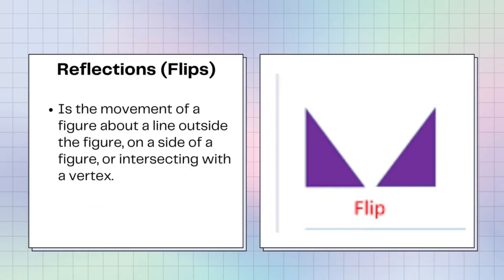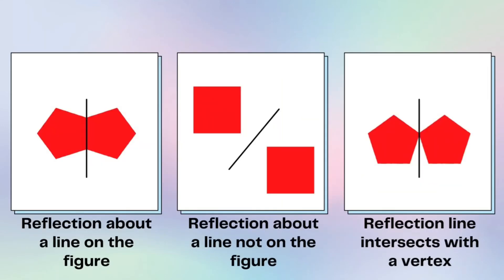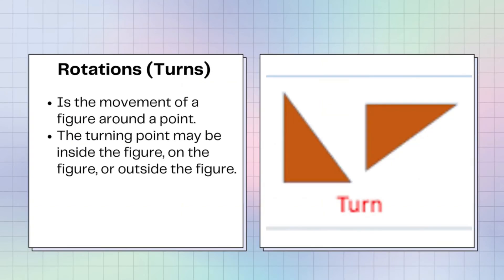The second one is reflection or flips. Reflections or flips is the movement of a figure about a line outside the figure, on the side of a figure or intersecting with a vertex. Here are some examples of reflection or flips. The first is reflection about a line in a figure, second reflection about a line not on the figure, the last one reflection line intersects with a vertex.